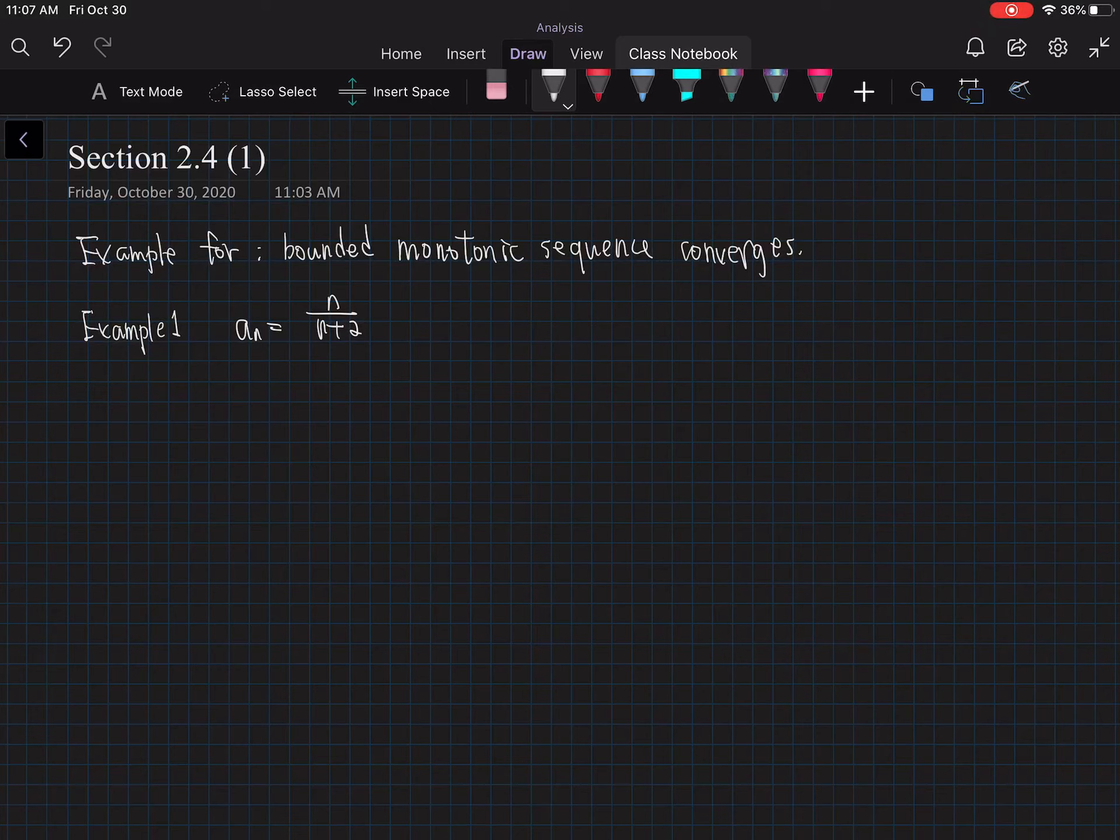Now we want to look at an example or two of a bounded monotonic sequence that converges. So the first example we have is a_n equals n over n plus 2.